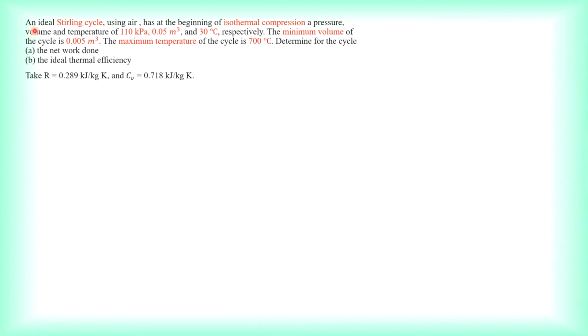From the question: an ideal Stirling cycle using air has, at the beginning of the isothermal compression, a pressure of 110 kPa, a volume of 0.05 m³, and a temperature of 30°C. The minimum volume of the cycle is 0.005 m³ and the maximum temperature is 700°C. Determine the net work output and the thermal efficiency. The specific gas constant is 0.289 kJ/kgK and the specific heat at constant volume is 0.718 kJ/kgK.